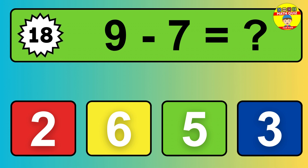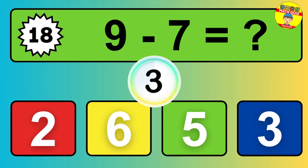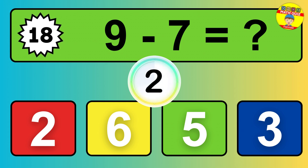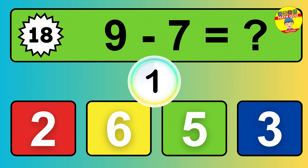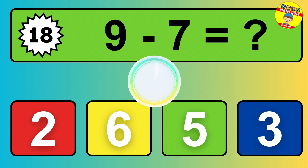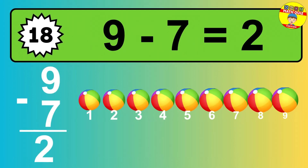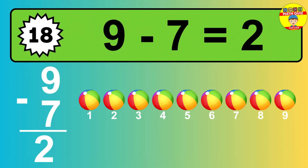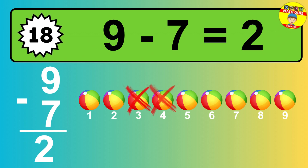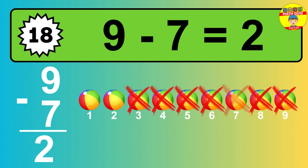Question 18: 9 minus 7 equals what? The answer is, 9 minus 7 is 2. Let's count it: 1, 2.